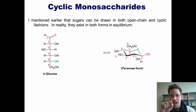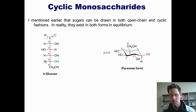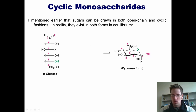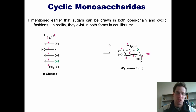So now I'm going to explain it to you. In reality, the open chain form of glucose shown here does exist in solution in a small amount, but it's in equilibrium with the ring structure shown here at the right. So how in the world are they the same molecule going back and forth in equilibrium?